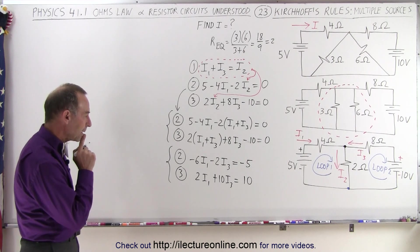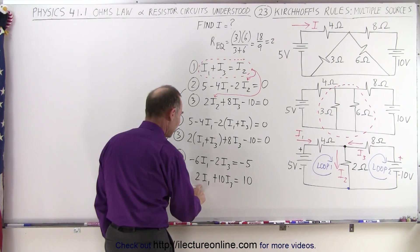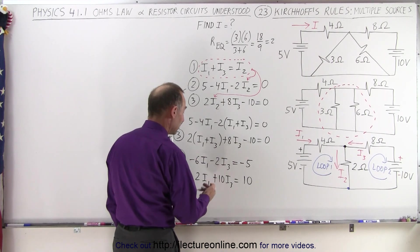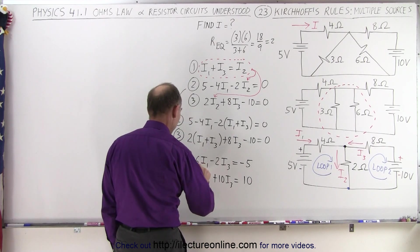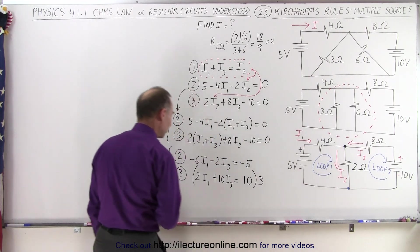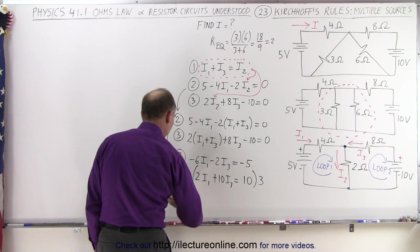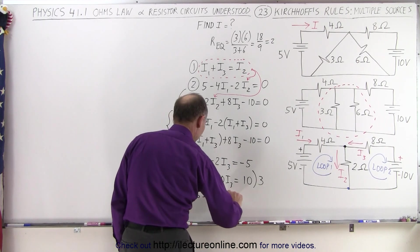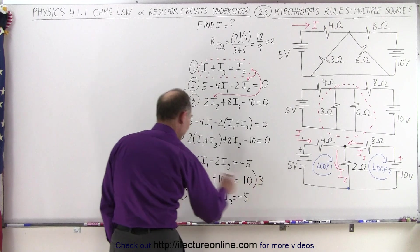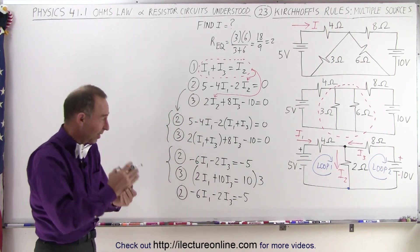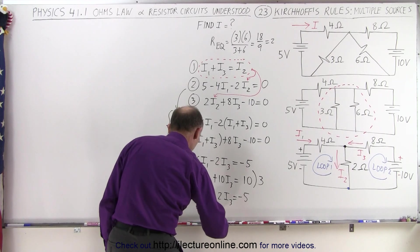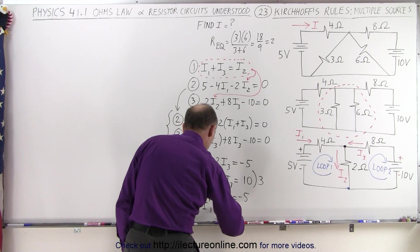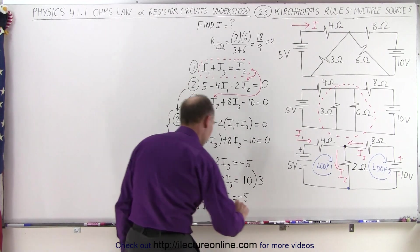Notice that if I multiply the bottom equation by three, I will get six I1 here. When I add that, the I1s are eliminated. So let's go ahead and do that. So I'm going to multiply this one here by three, a positive three, so that my second equation does not change. I get minus six I1 minus two I3 is equal to minus five, but the second equation, when I multiply both the left side and the right side by three, I get six I1, that's my third equation here, six I1 plus 30 I3 is equal to 30.